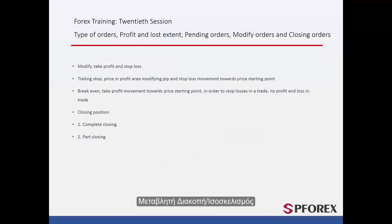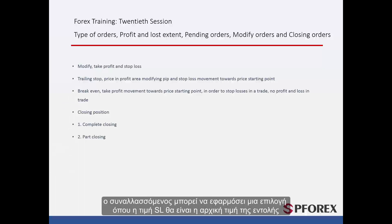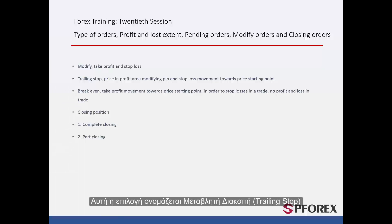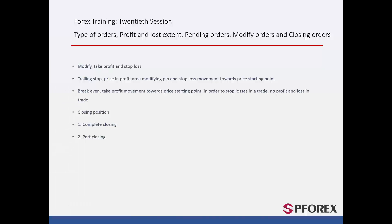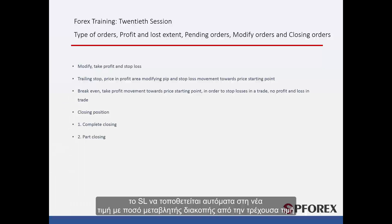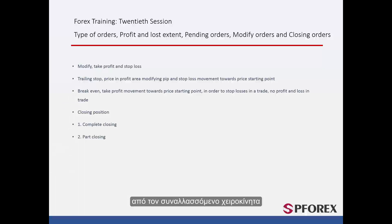In a trade in which price moves towards the TP point, a trader can place an option so that the SL price would become the starting order price. This option is called Trailing Stop. A trader selects the Trailing Stop amount so that if the price moves towards TP at a higher rate, SL would be placed automatically at a new price with the Trailing Stop amount from the current price. Breakeven is another option in which SL price can be manually relocated to the order price.